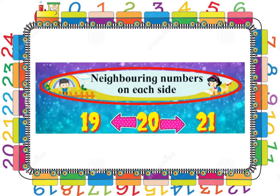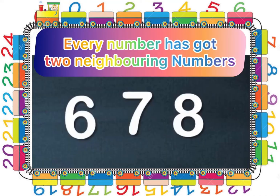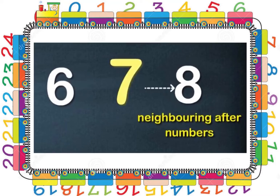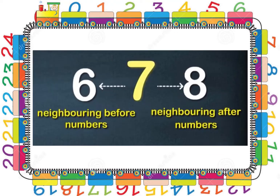So children, today in the same way we are going to learn about the neighbours of numbers — that is, neighbouring numbers on each side. Every number has got 2 neighbouring numbers: one on the right, that means the number which comes after, and the other on the left, that means the number which comes before.